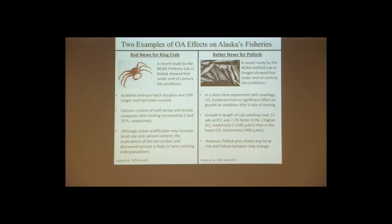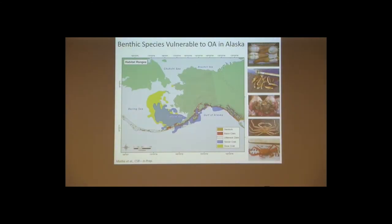A two-year study by Tom Hurst on juvenile and larval pollock showed the pollock themselves did okay in a higher CO2 environment — no significant signs of metabolic stress. However, their prey stocks may ultimately be vulnerable, and a new study is looking at behavior, where juvenile pollock do show changes in behavior when exposed to high CO2. So while there's initial good news for pollock, a number of studies remain to be done before anything can be concluded definitively.